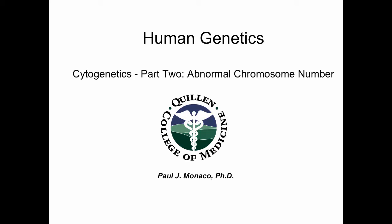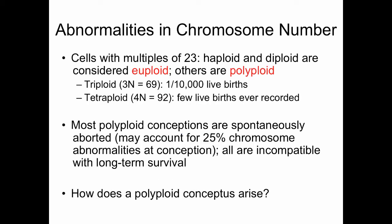This podcast will focus on abnormal chromosome number. Abnormalities in chromosome number can involve cells that have multiples of 23, which would be haploid and diploid, and these would be considered euploid.